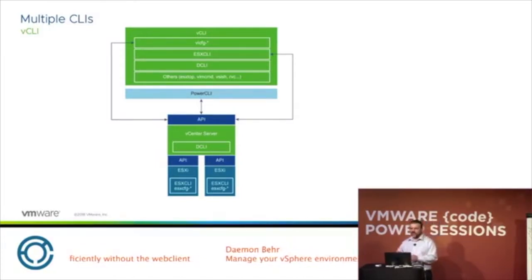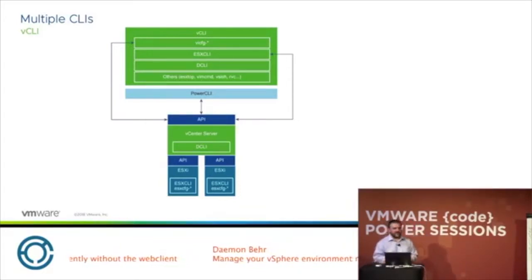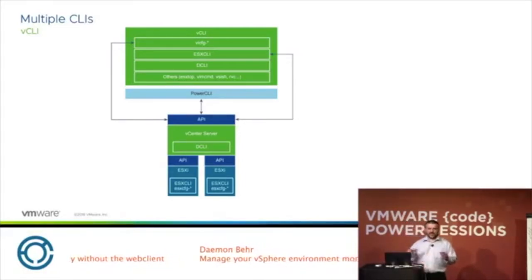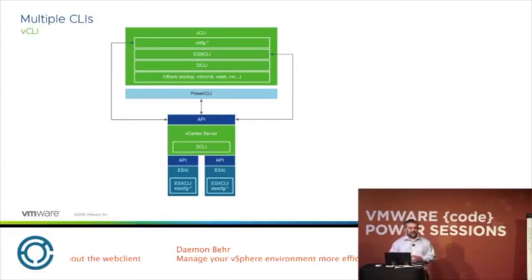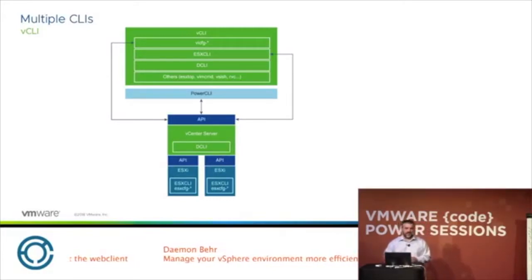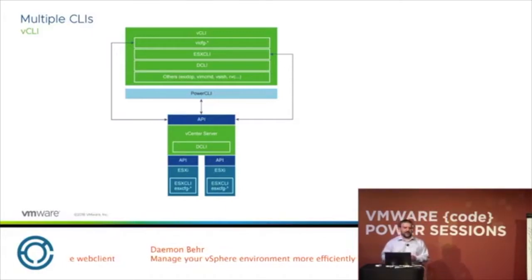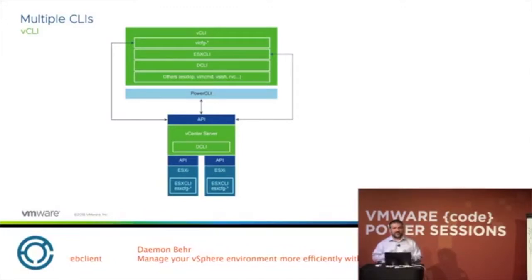The vCLI has access to a number of different interfaces. You have VICFG, ESXCLI, DCLI, and a number of other ones — all of which I'll describe later. That communicates with the APIs. You also have PowerCLI which can communicate directly with those APIs. You have the DCLI in vCenter Server, which allows you to communicate with the host through the APIs as well. So there are a lot of different types of CLIs you can access.